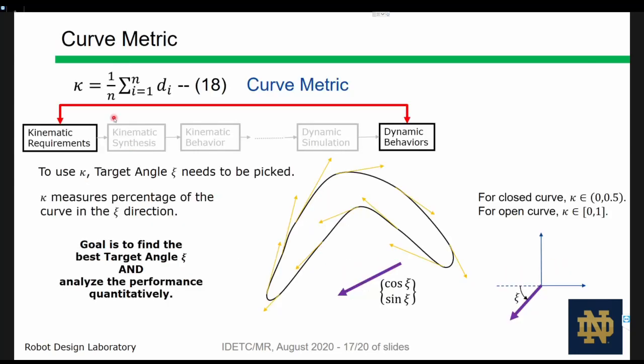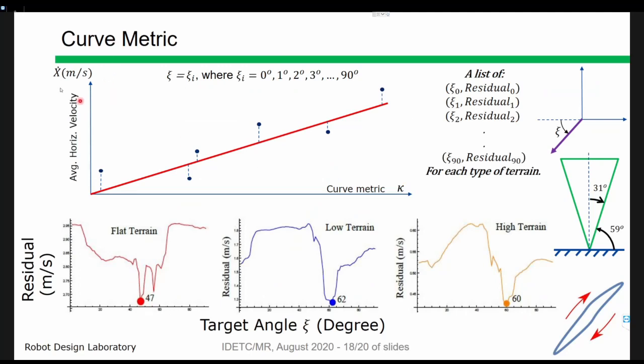To understand the geometric characteristics that lead to a superior curve, we also devise a curve metric that can be computed independent from dynamic simulations. Our metric roughly measures the percentage of a curve that moves the foot in a specific direction. For example, for the direction c equal to 10 degrees, roughly 10% of the curve on the left move at 10 degrees, and for the curve on the right, 40%. The curve metric was correlated with dynamic simulation results by relating it to the average horizontal velocity across different terrains, and we do a linear fit. Whichever one with lower residual indicates the best predictor.